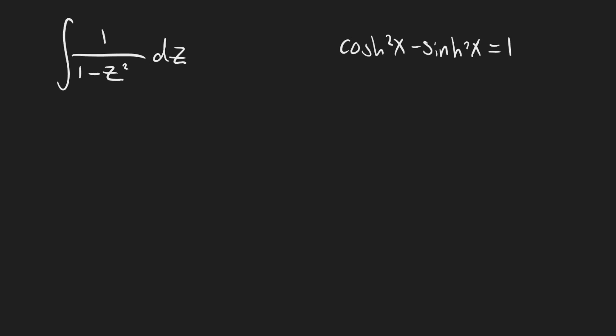We're going to divide both sides of this equation by cosh squared of x, and that's going to give us one minus — well, what's sinh over cosh? Hyperbolic trigonometric functions are so analogous to the regular versions that sinh over cosh is tanh, the hyperbolic version of tangent. So this is one minus tanh squared of x equals one over cosh squared of x. Analogous to regular trig identities, one over cosine is secant, so one over cosh is sech. Therefore, one over cosh squared of x is sech squared of x — just the hyperbolic version of secant.